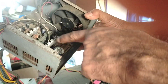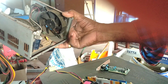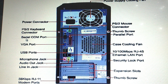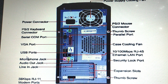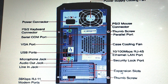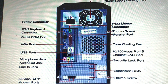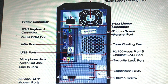This is the motherboard back panel, showing the power connector, keyboard connector, serial port, USB ports, expansion slots, mouse connector, EGA port, USB ports, microphone, audio, line-in, and Ethernet LAN port.